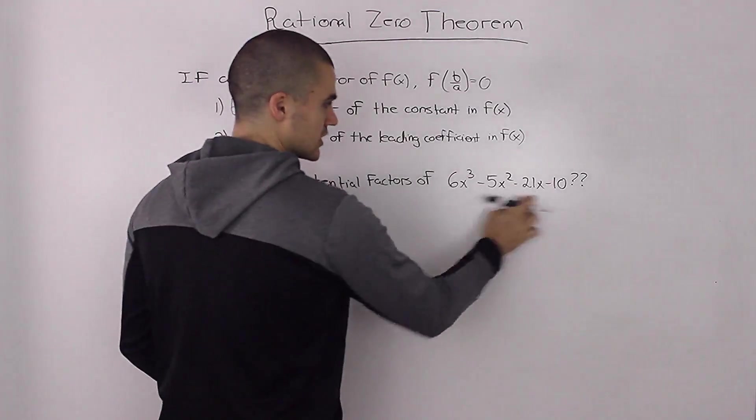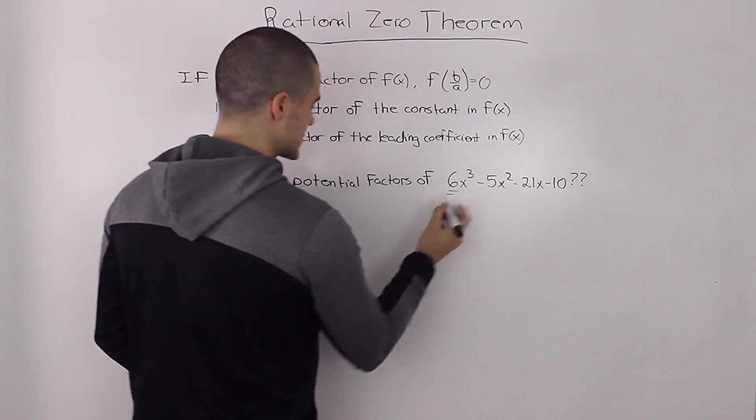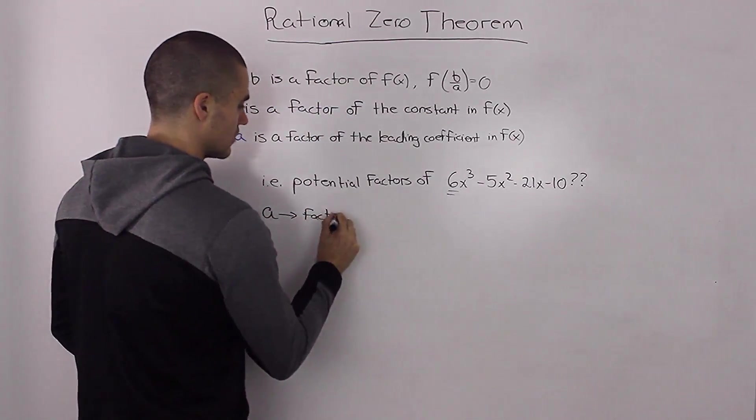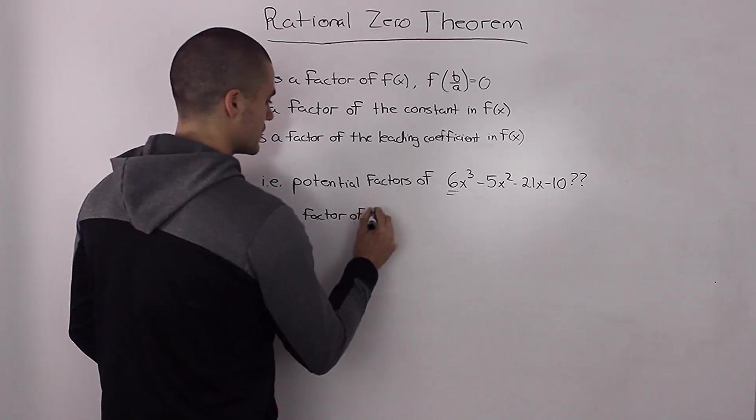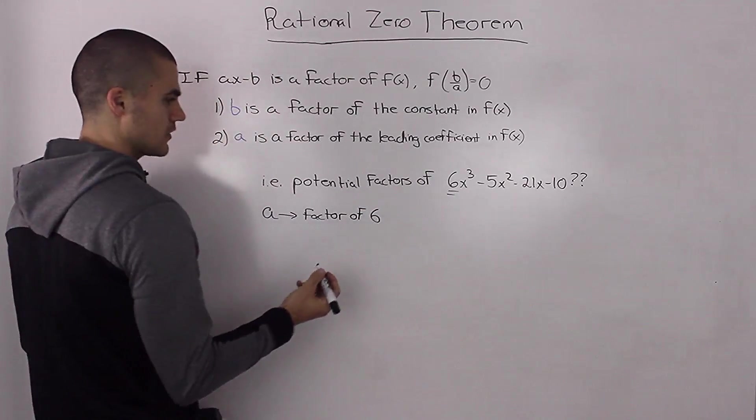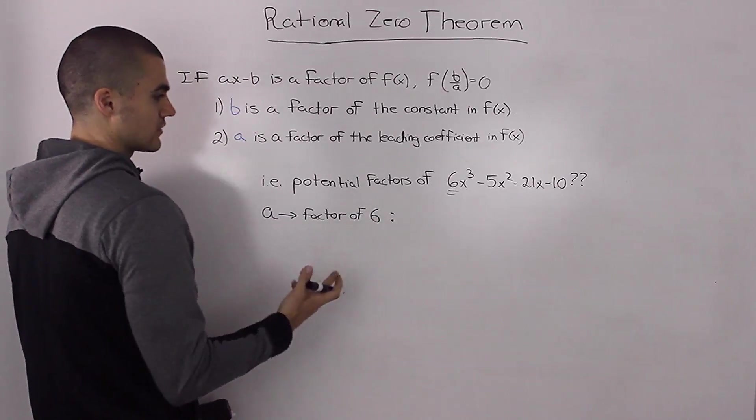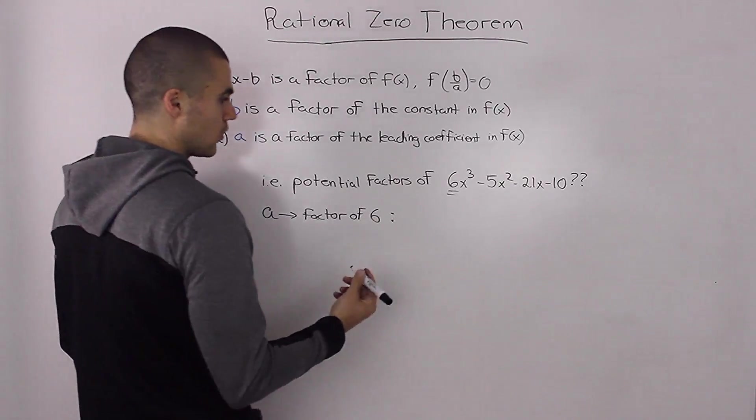We know that the a value is a factor of the leading coefficient. So what's the leading coefficient in this polynomial? Well it's this 6 right here, so we know a is going to be a factor of 6.